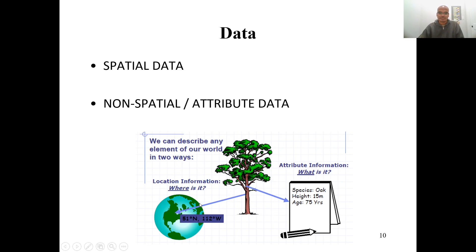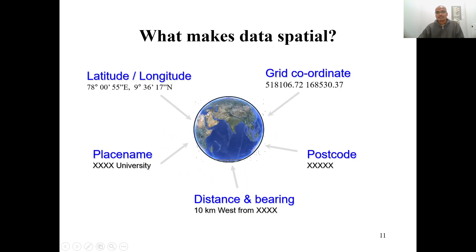How can we make data spatial? You can make spatial data with the help of latitude and longitude — we call this absolute positioning using coordinate systems, which we will discuss in detail later. Or you can use grid coordinate systems, dividing a piece of land with x and y axes and assigning numbers to each grid intersection. Data can also be made spatial using place names, postcodes, or even distance and bearing. These are all ways to make our data spatial.